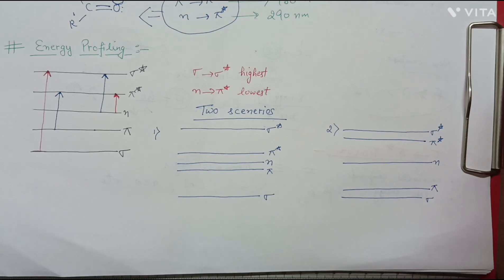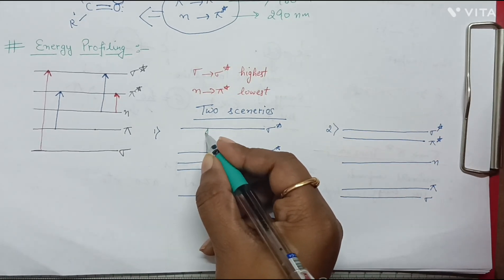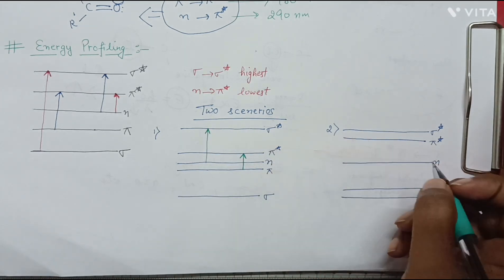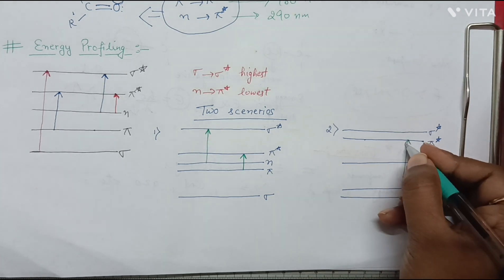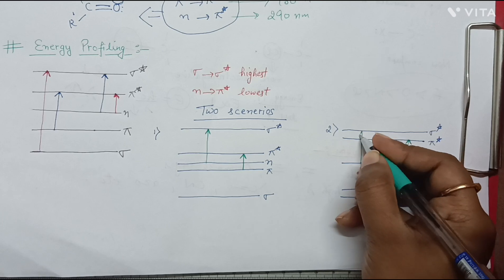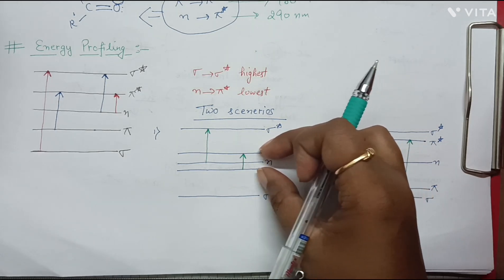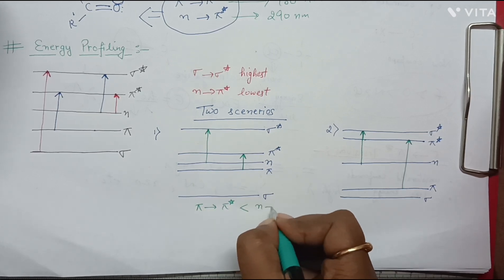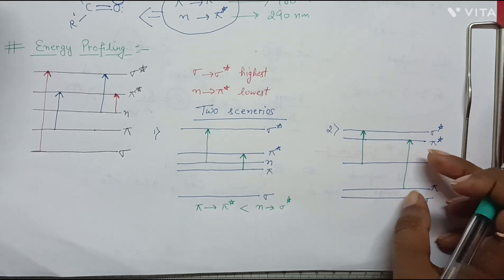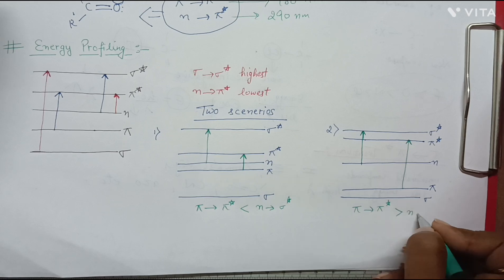If we look at the energy gaps — pi to pi star and n to sigma star — in the first scenario the energy difference between pi and pi star is very small, meaning pi to pi star transition energy gap is less compared to n to sigma star. In the second scenario, this gap is reversed: pi to pi star energy gap is more compared to n to sigma star.